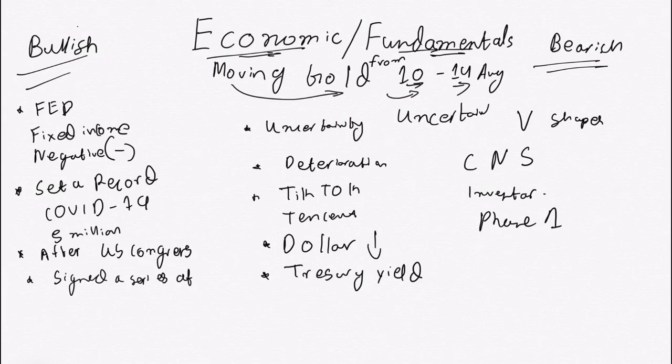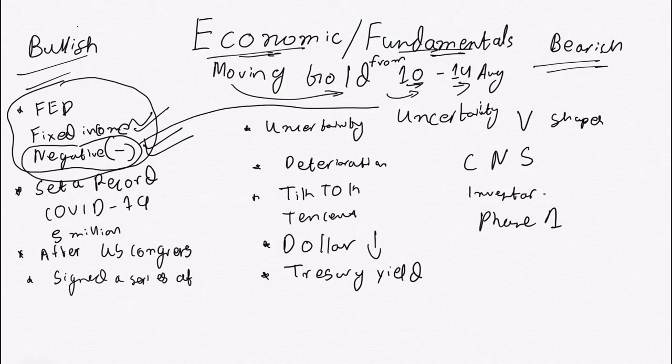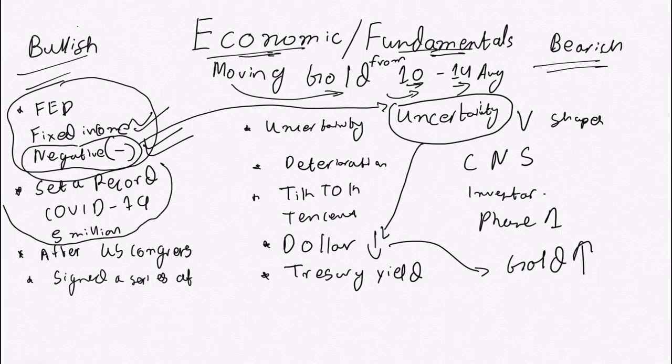Now concluding, we've seen that the Fed has said that its policies will support the fixed income narrative and moreover they present a perspective that they would be encouraging the negative bond yield, due to which we can see uncertainty in the form of dollar losing its value. Dollar being inversely proportioned to gold, we can see a steady rise in the prices for gold. Moreover, the US has set a record for COVID-19, crossing its milestone of 5 million, which means again creating uncertainty in the market.